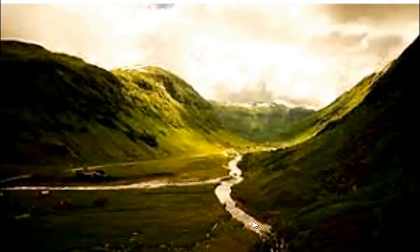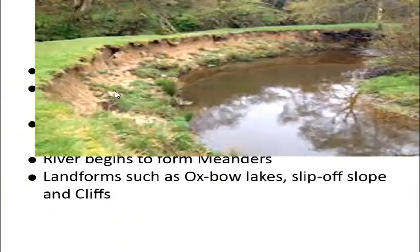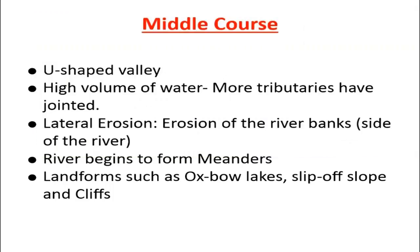Another feature of the middle course is lateral erosion. Lateral erosion is basically erosion of the sides of the valley — in geographical terms, this is what we refer to as erosion of the banks. The river is busy eroding laterally, on the sides, and as a result the middle course is wider in comparison to the upper course. We also find in the middle course that the river is meandering — those bendings in the river are what we refer to as meandering.